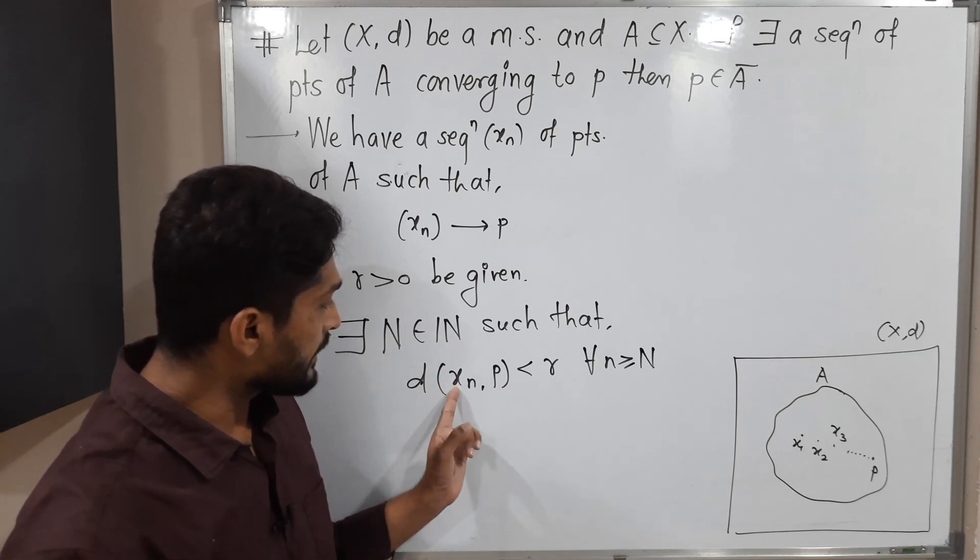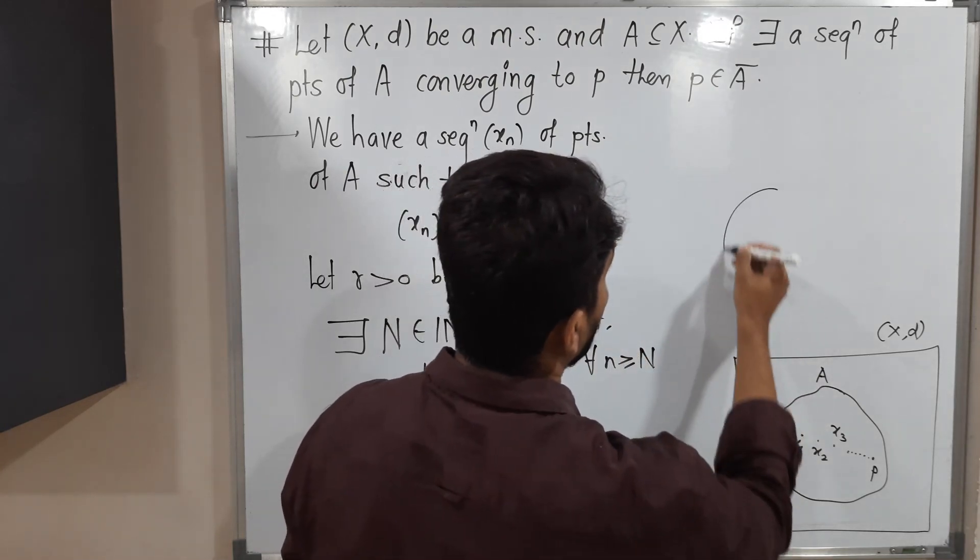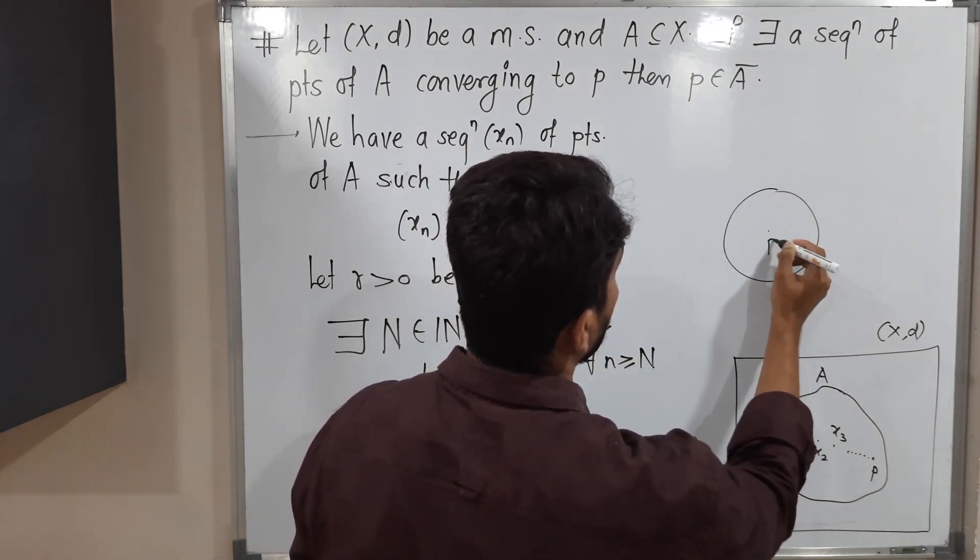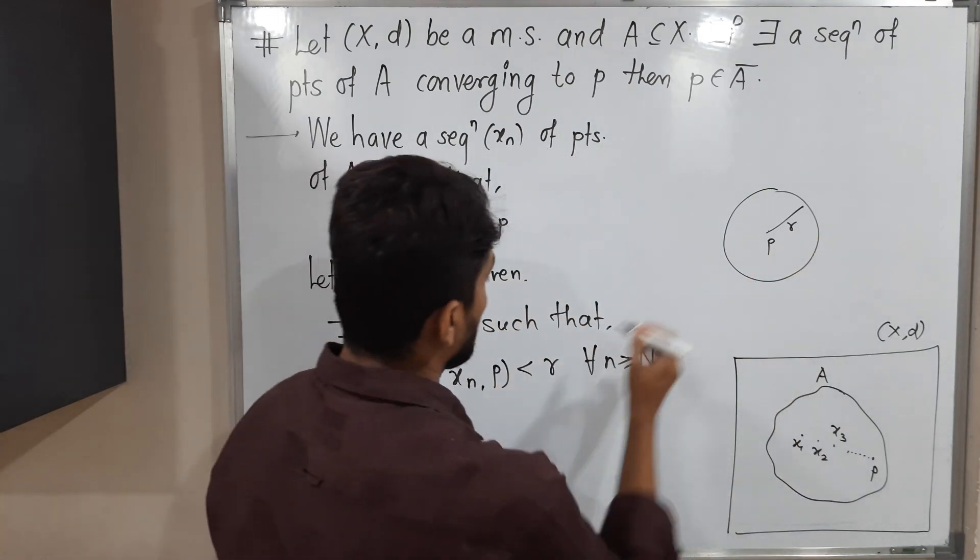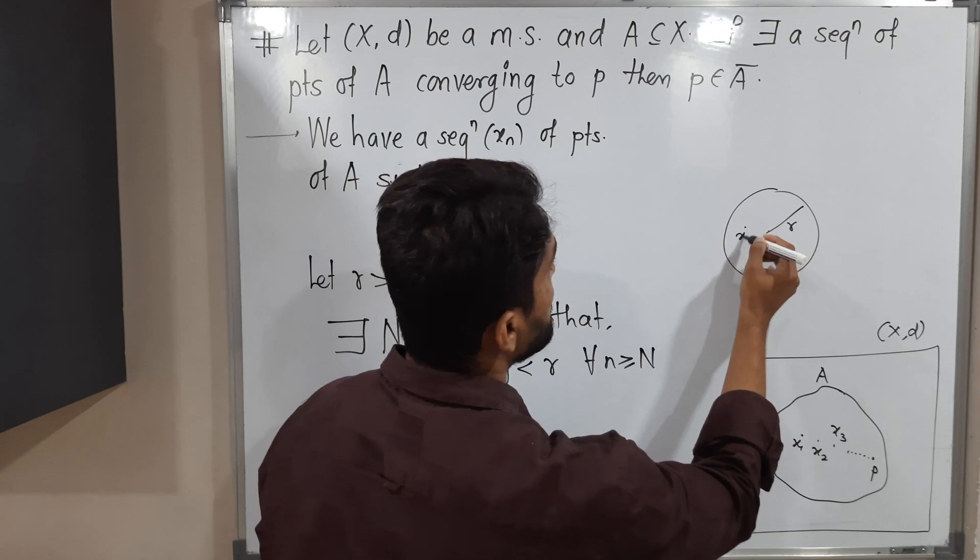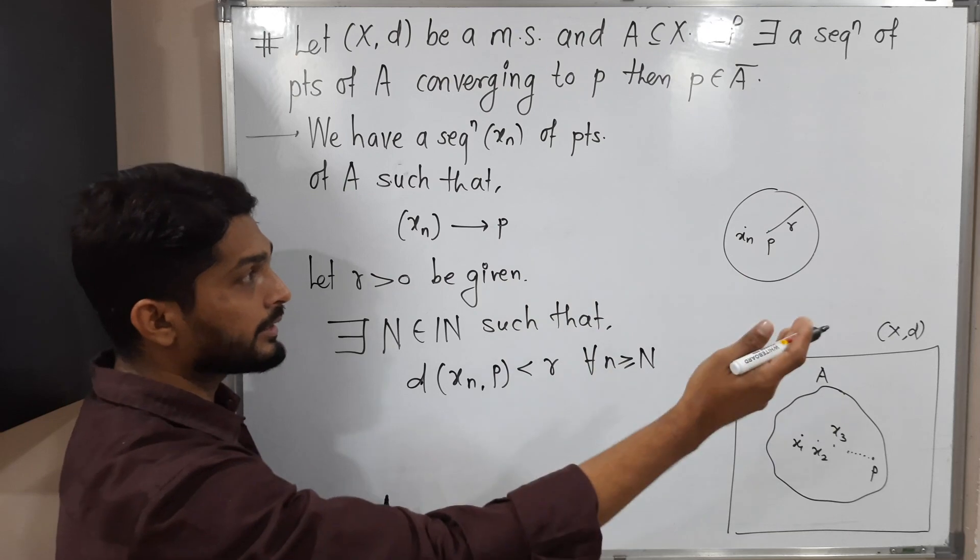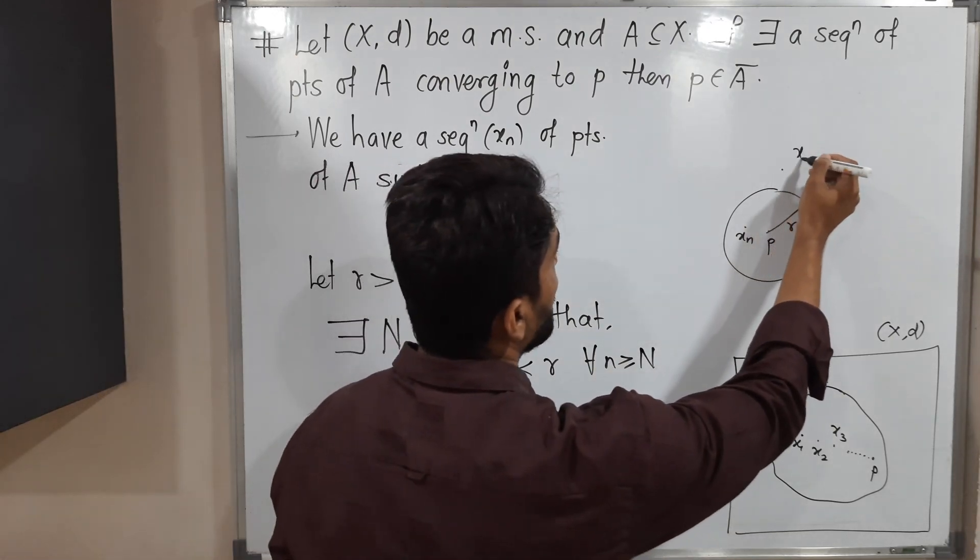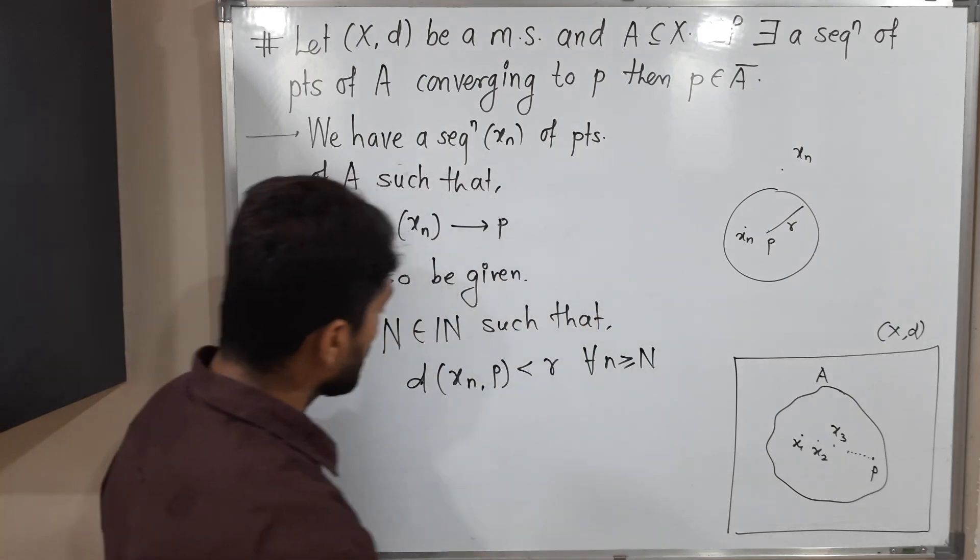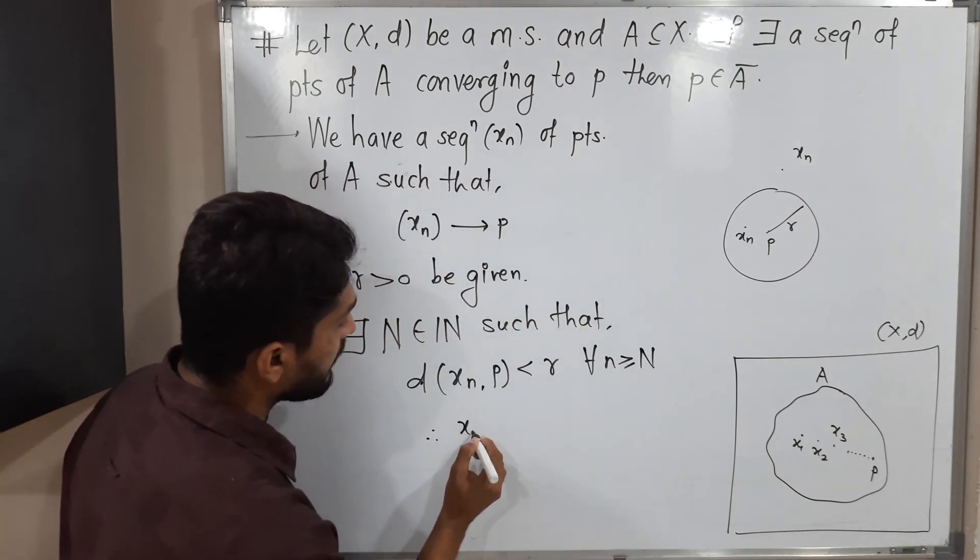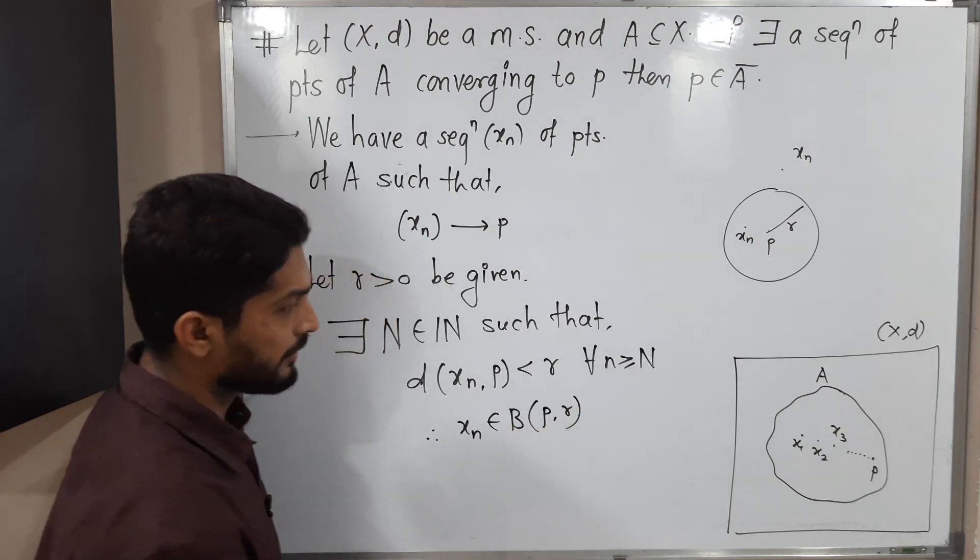Distance of xn from point P is less than R. Suppose we have a ball with center P and radius R. Distance of xn from P is less than R, which means xn should be inside the ball. If distance is greater than R, then xn will be outside the ball. But here distance is less than R, so xn lies inside the ball with center P and radius R.